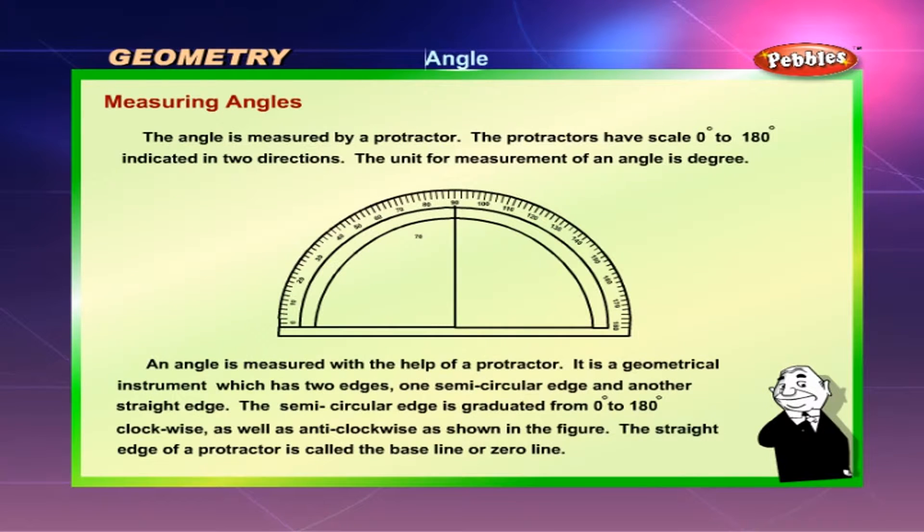Measuring Angles. The angle is measured by a protractor. The protractors have scales from 0 degrees to 180 degrees, indicated in two directions. The unit for measurement of an angle is degree. An angle is measured with the help of a protractor. It is a geometrical instrument which has two edges, one semicircular edge and another straight edge. The semicircular edge is graduated from 0 degrees to 180 degrees clockwise as well as anticlockwise as shown in the figure.